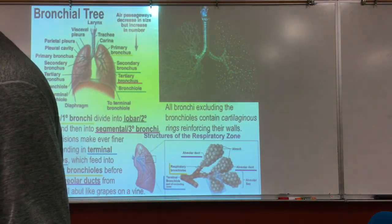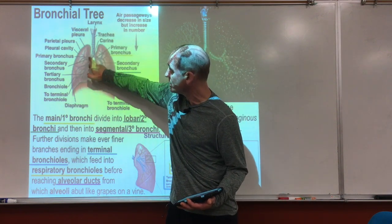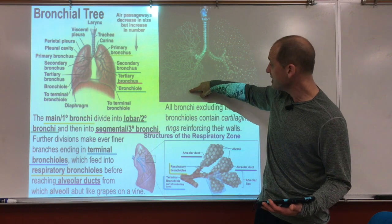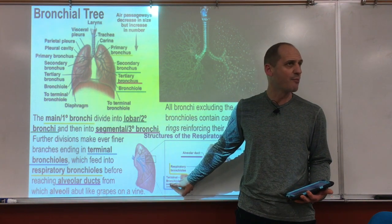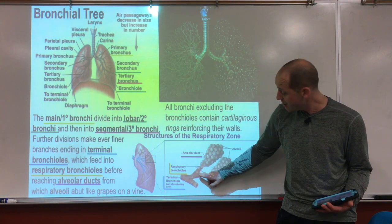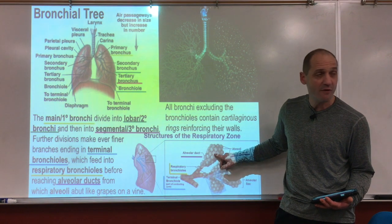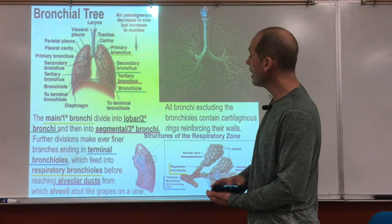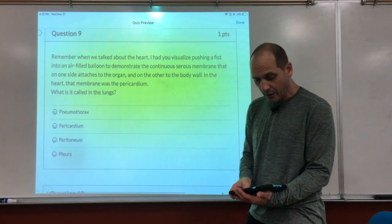From the trachea we go into the bronchial tree. Where it splits, we go to two bronchi, and those split further and further. Eventually we get small enough to call them bronchioles, then terminal bronchioles, then respiratory bronchioles. From those we have the alveoli — grape-like structures — where external respiration takes place.